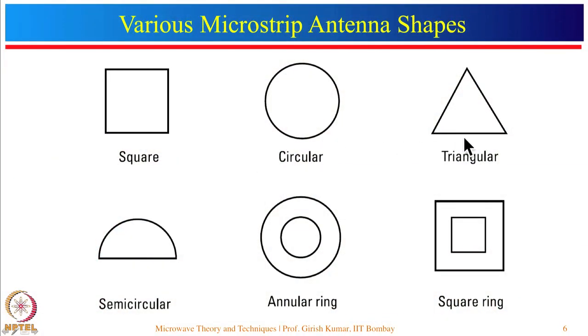So far I showed only the rectangular microstrip antenna configuration, but many different shapes have been reported in the literature: square, circular, triangular, semicircular, annular ring, square ring, pentagon, hexagon, and so on. However, today's lecture will focus mainly on the rectangular microstrip antenna.